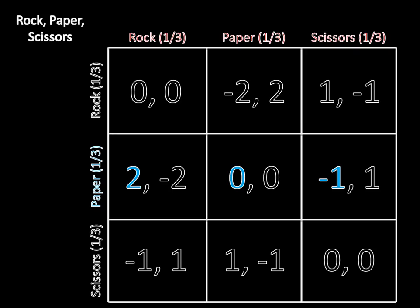It's no longer the case that you're indifferent, because paper becomes a really good strategy. If your opponent mixes one-third among each strategy, the expected utility of playing paper is two times one-third, plus zero times one-third, plus negative one times one-third — that's positive one-third. But playing rock gives zero with probability one-third, negative two with probability one-third, and positive one with probability one-third, which sums to negative one-third. That's strictly worse, so indifference no longer holds and we can't easily identify the Nash equilibrium.